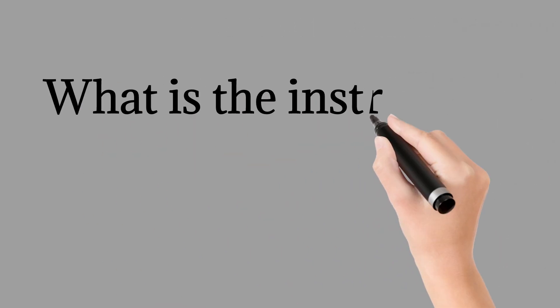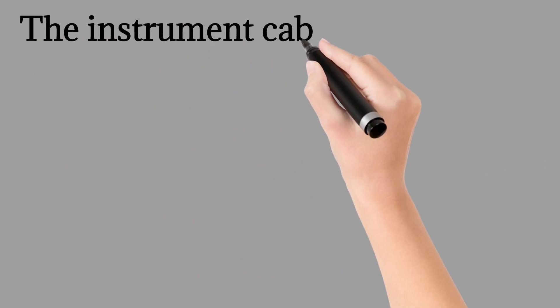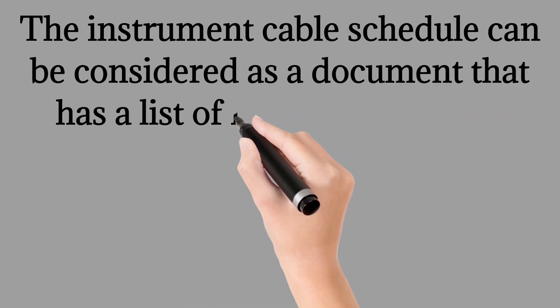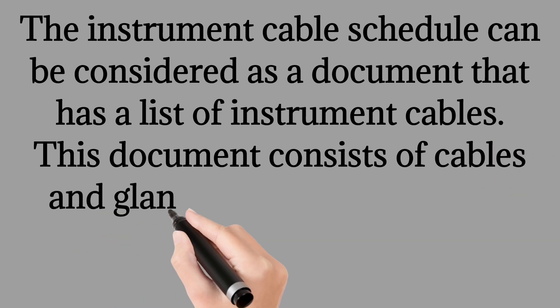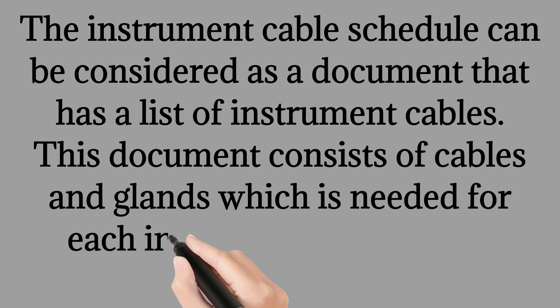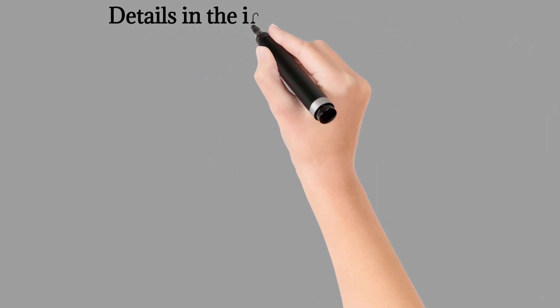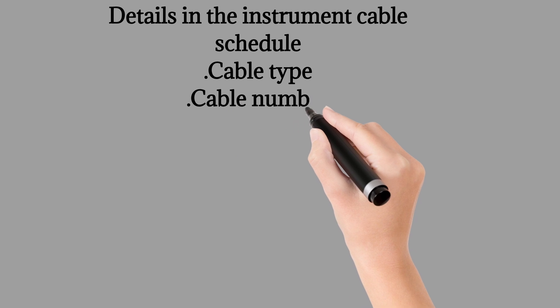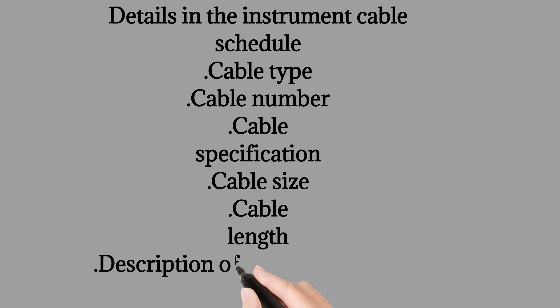What is the instrument cable schedule? The instrument cable schedule can be considered as a document that has a list of instrument cables. This document consists of cables and glands which is needed for each instrument connection. Details in the instrument cable schedule include cable type, cable number, cable specification, cable size, cable length, description of the source and the destination, cable gland, and also the size of each cable.